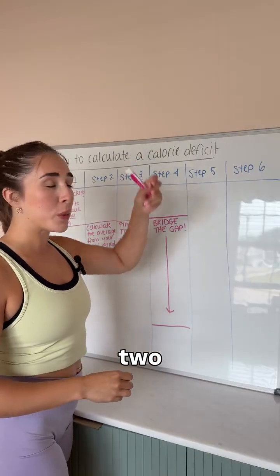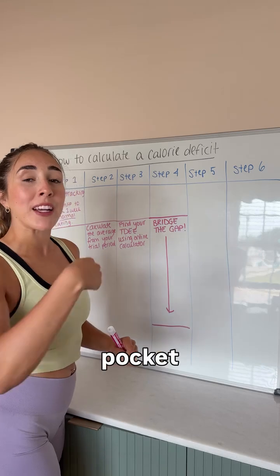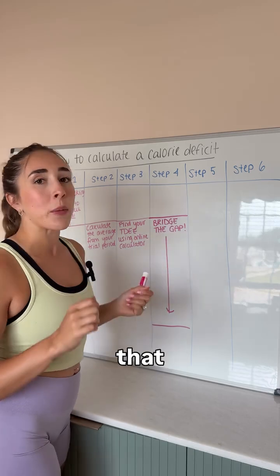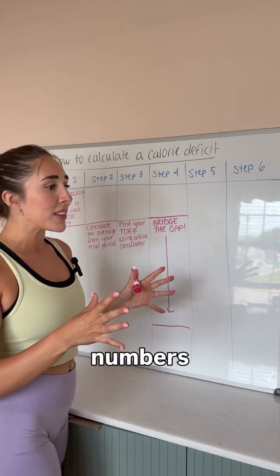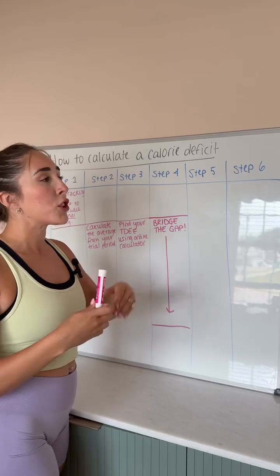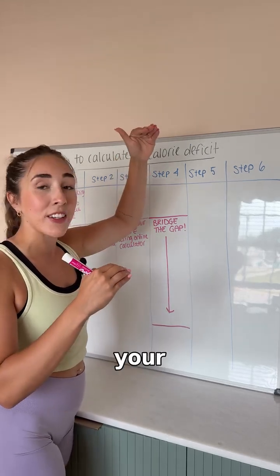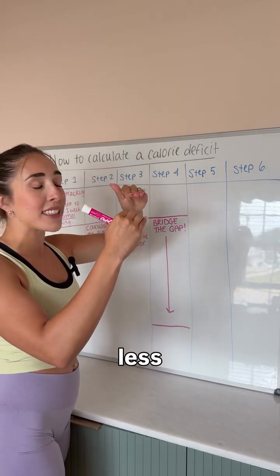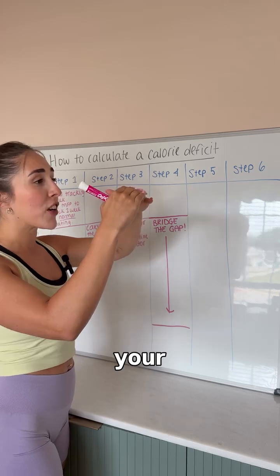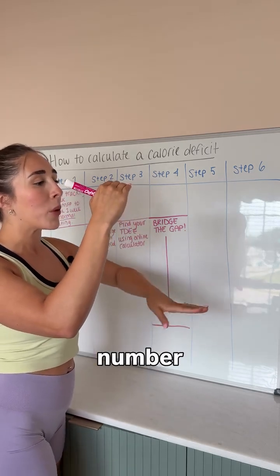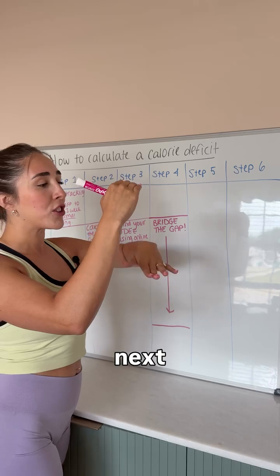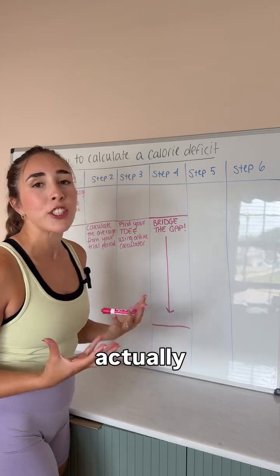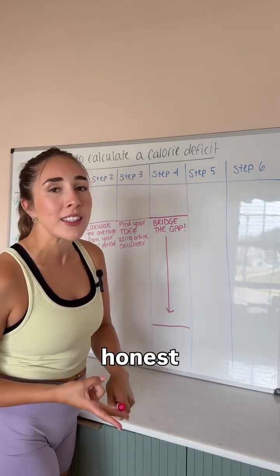Step number four is gonna be over the course of two weeks. You're taking that number out of your back pocket from step two — the average number — and comparing it with your maintenance calories from step three. Now look at those two numbers and we have to bridge the gap. If your average number is way higher than your calculated maintenance number, over the course of two weeks we're gonna try to eat less and less to meet that maintenance number each day. If your average number was way lower, we're gonna try to eat more and more to hit that maintenance number. During this time, it's also going to help you practice tracking your food accurately, using a food scale and being honest with yourself about what you're actually eating.